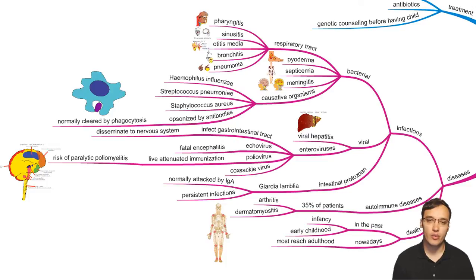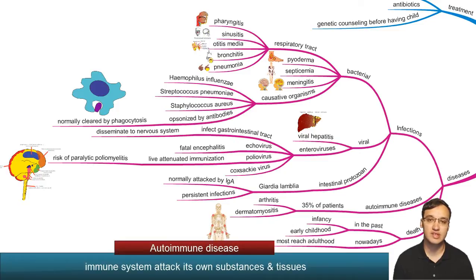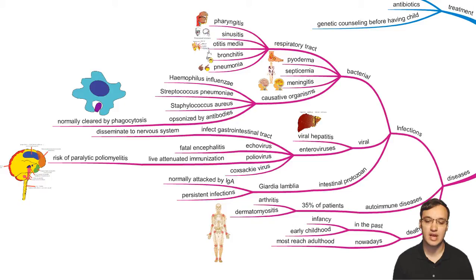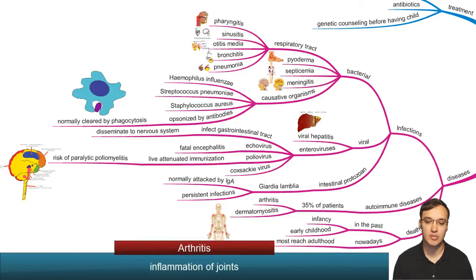Clinically, we can see infections, autoimmune diseases, and unfortunately death. In the past, the death rate was quite high for these patients, especially in infancy or early childhood. Nowadays most patients reach adulthood, which is a great improvement due to therapy. Approximately 35% of patients will have some autoimmune diseases, such as arthritis or dermatomyositis.